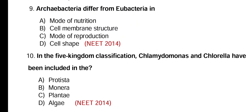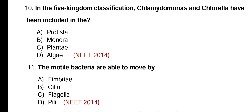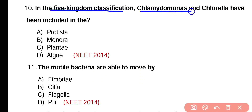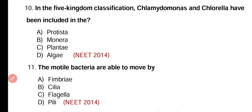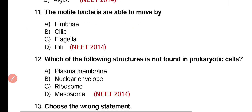Question number 10. In five kingdom classification system, Chlamydomonas and Chlorella have been included in which kingdom? Chlamydomonas and Chlorella are placed in kingdom Protista. Correct answer is option A.